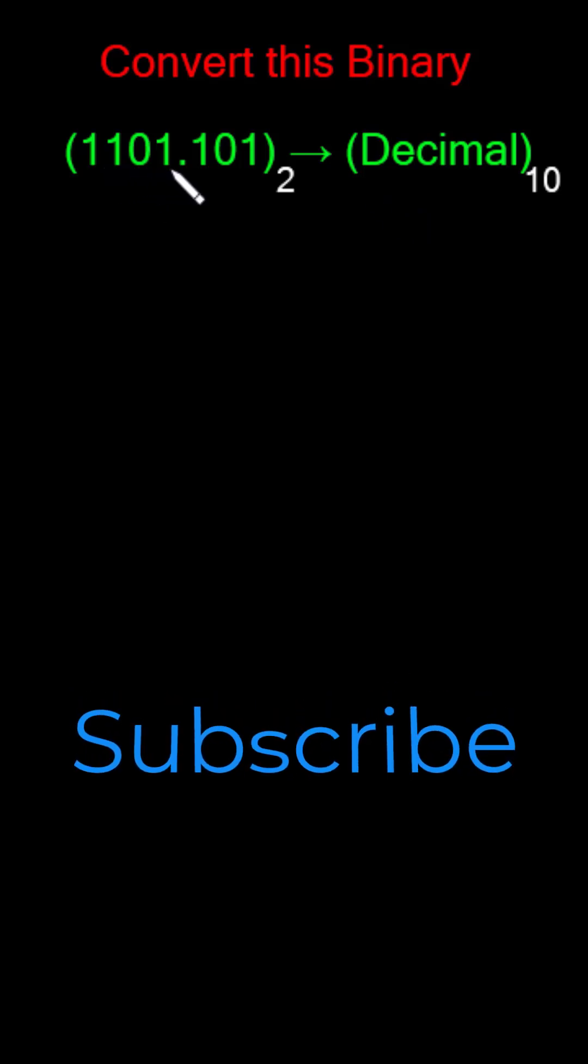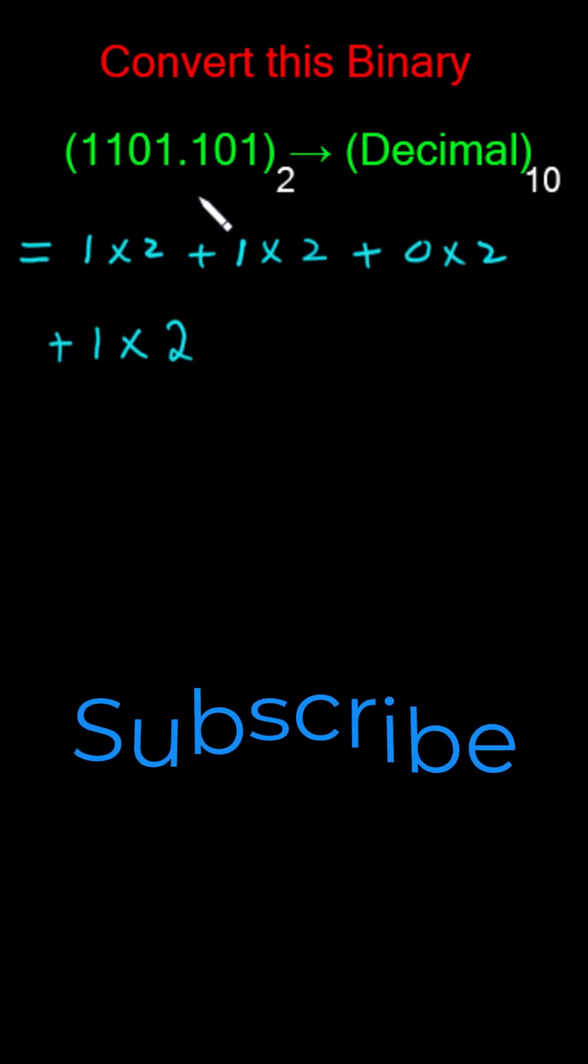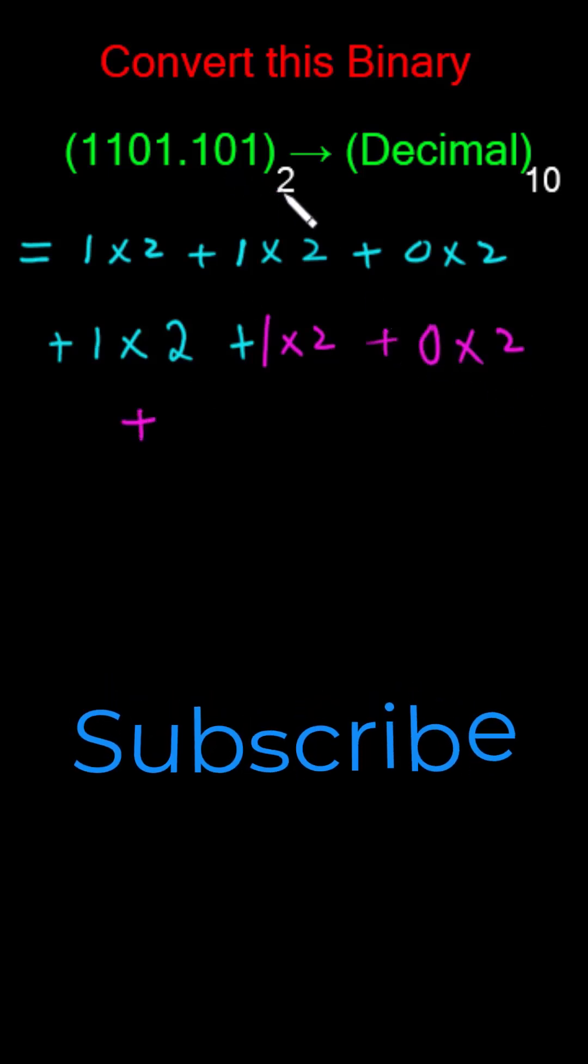So let me do that. 1 multiply by 2 plus 1 multiply with 2 plus 0 multiply with 2. Now this 1 multiply with 2, then this 1 which is on the right of the point plus 1 multiply with 2 plus 0 multiply with 2 plus 1 multiply with 2.